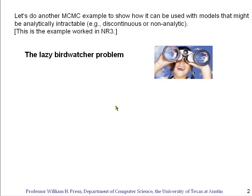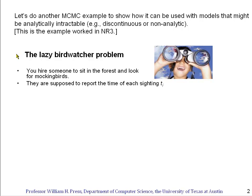I call this the lazy bird watcher problem. You hire somebody to sit in the forest and look for mockingbirds, and they're supposed to report the time t_j of each sighting, recording it in a notebook as a list of times. But they're lazy, and they only write down every k1-th sighting — for example, if k1 equals 3, they only write down every third sighting, and it's exactly every third.